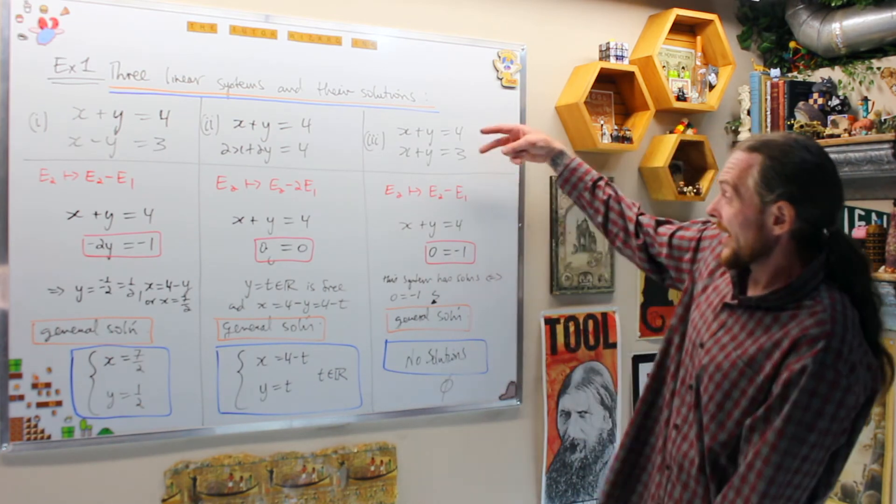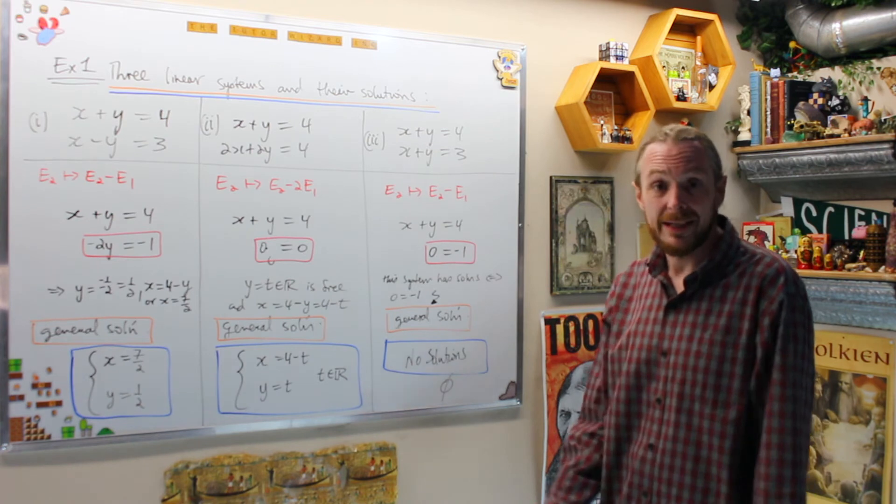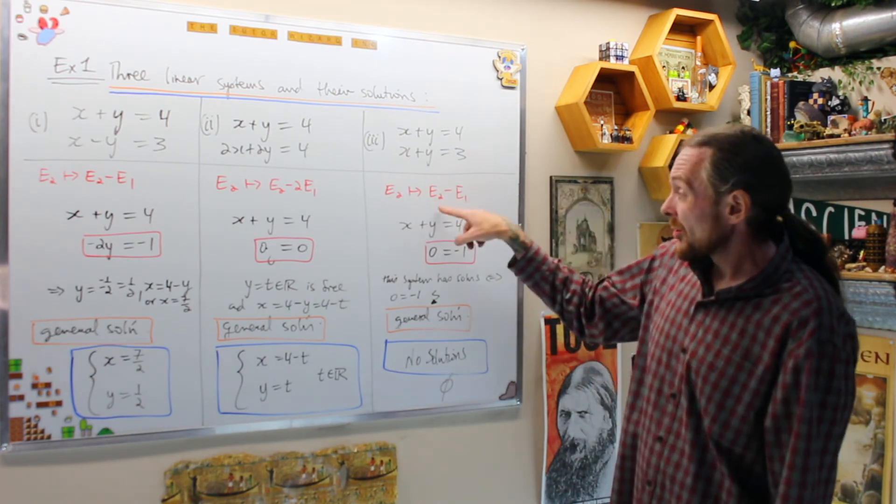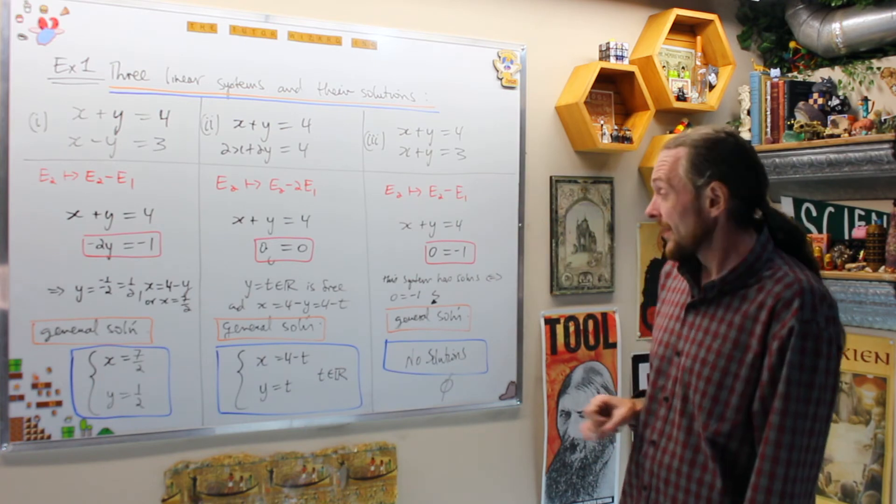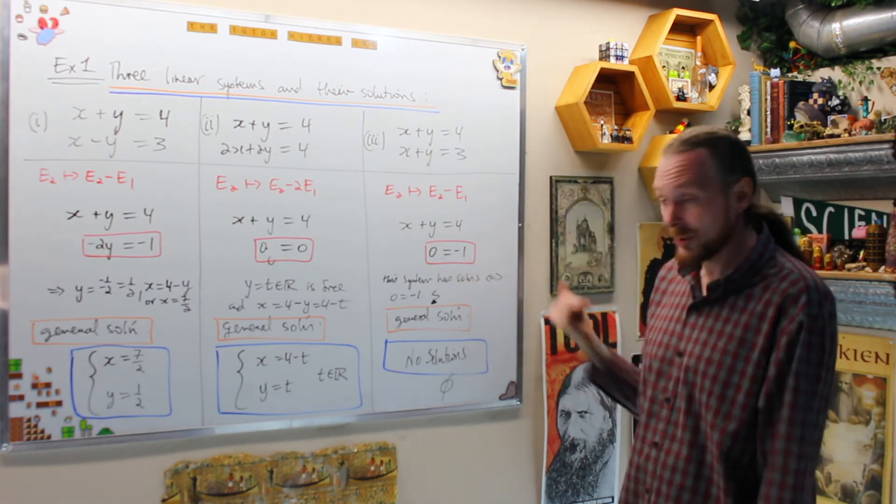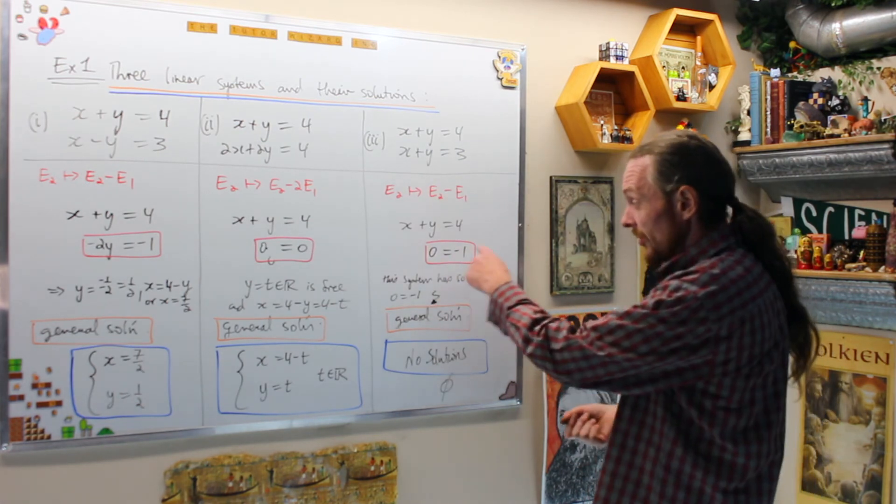Then in our last case, when I see that we have the exact same equations, or I suspect I make it a contradiction, what we do is again replace equation two with equation two minus equation one. This time what I get is zero equals something non-zero, so zero equals negative one in this case. But in any scenario when you get this, you'll get zero equals something non-zero.